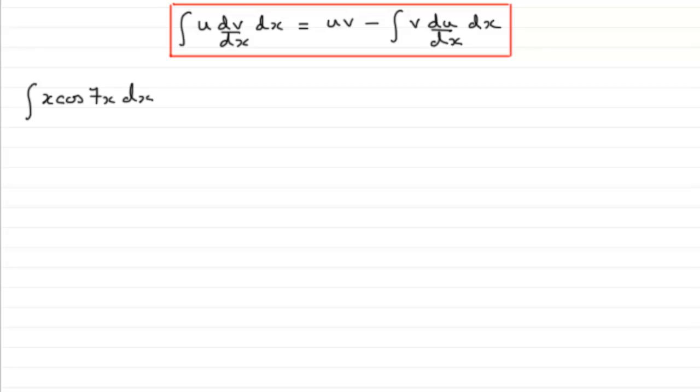Okay, so to do this what we do is we let this part here be u and this is the part which is dv by dx.